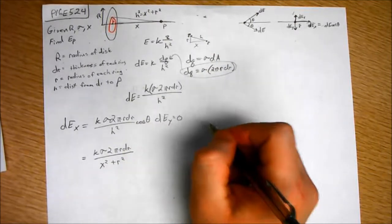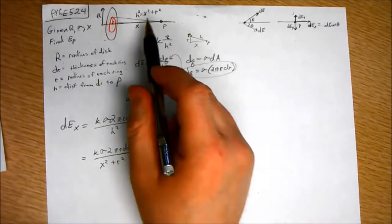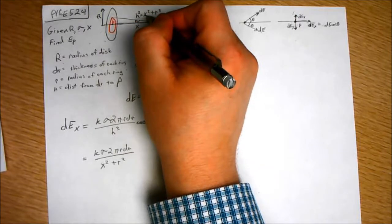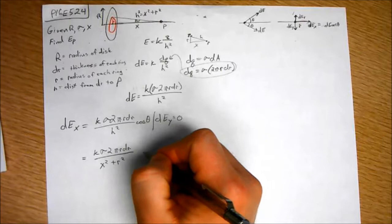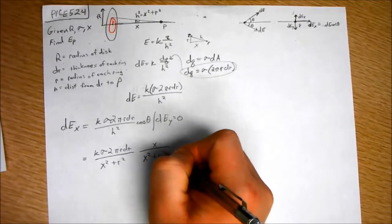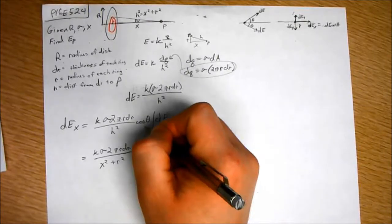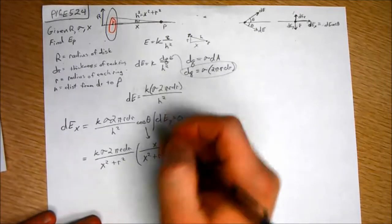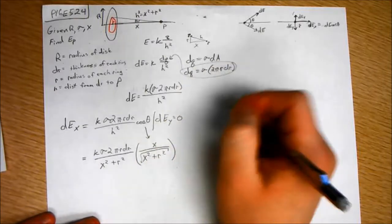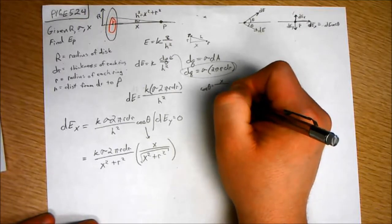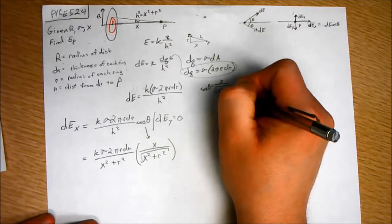Well, what is cosine of theta? Cosine of theta, where this is theta, is adjacent X over hypotenuse, which is the square root of X squared plus R squared. So, this is X over the square root of X squared plus R squared. Cosine theta equals X over the hypotenuse, which is the square root of X squared plus R squared.